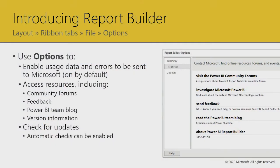There's also the ability to open Options from the File ribbon tab. Options are useful for accessing resources like links to community forums, feedback, the Power BI team blog, and the latest news from the engineering group. There's also the ability to check for updates. Report Builder is likely to be updated over time — not as often as the desktop tool, but you'll see a fair amount of updates throughout each year. By default you'll be automatically notified if an update becomes available. Certain enterprise organizations like to control exactly what version of Report Builder is used, so they often turn that off.